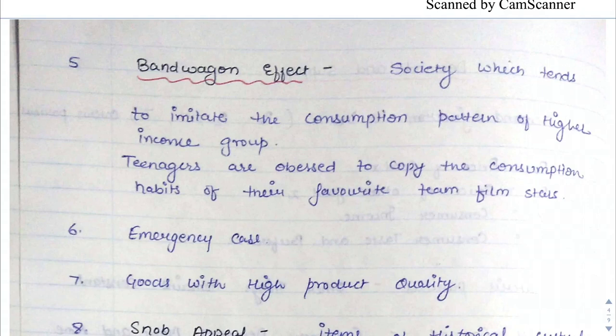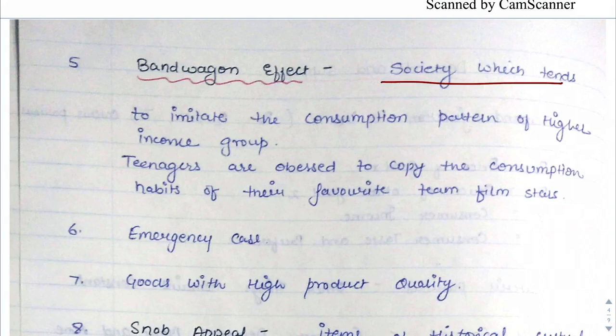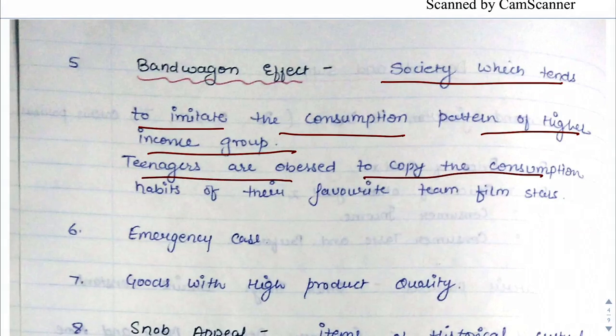Next is the bandwagon effect. When we see any actor or actress, we want to imitate them. When it comes to imitation, we call it the bandwagon effect — we are ready to purchase something expensive just because it is trendy. Society tends to imitate the consumption pattern of higher income groups; for example, teenagers are obsessed with copying the consumption habits of their favourite film stars.